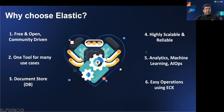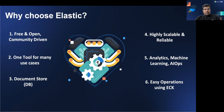Why we chose Elastic? Elastic is free and open. It's community-driven. It's one tool for many use cases. We use it for analytics, machine learning, AIOps, and it's very highly scalable and reliable. Using ECK makes it incredibly easier for us to use Elasticsearch and deploy it across multiple environments, including AWS.